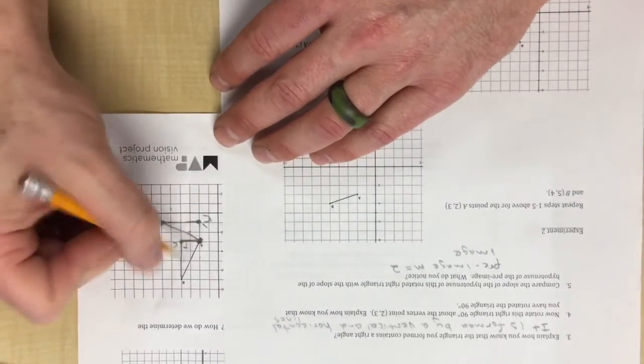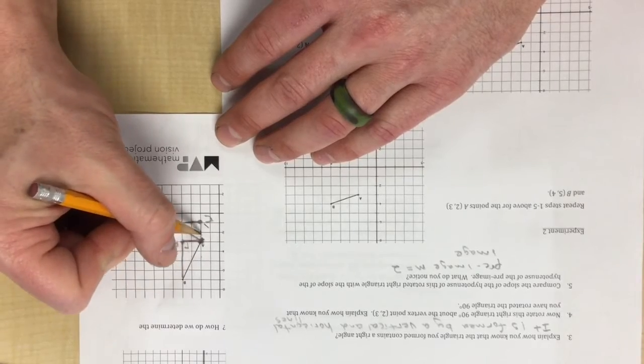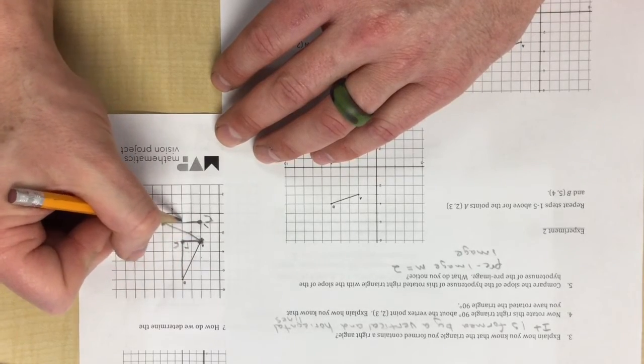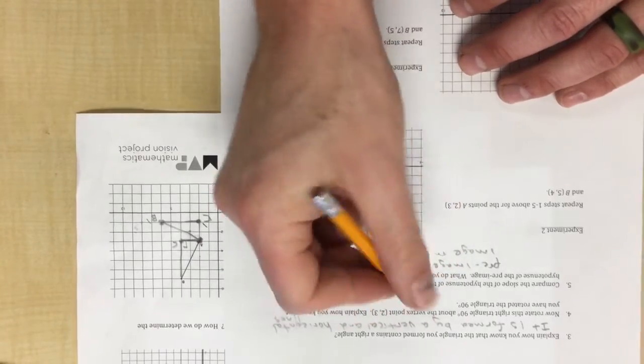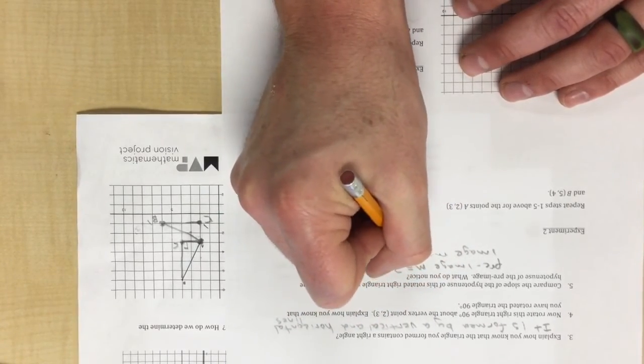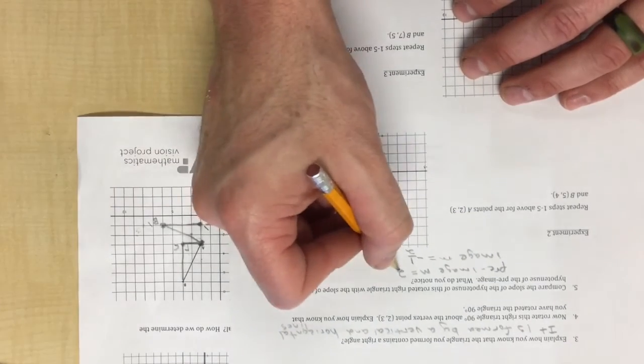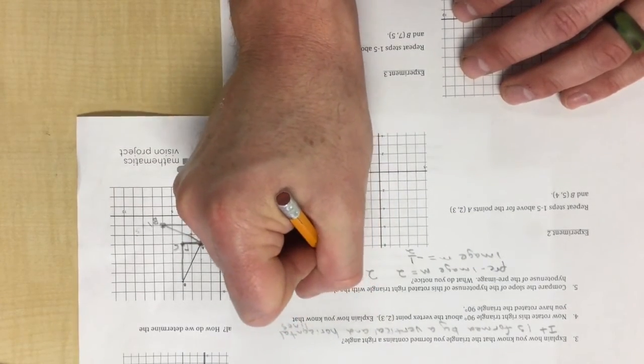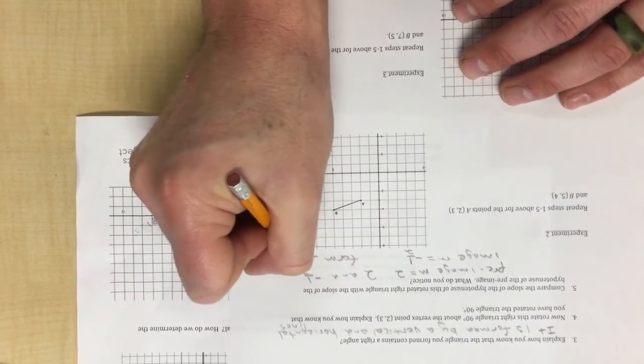And on the image, let's check it out. So here's the hypotenuse, and it goes to here, and it looks like the slope is down 1 over 2, down 1 over 2, down 1 over 2, which is a slope of negative 1 over 2. So I know that 2 and negative one-half form perpendicular lines.